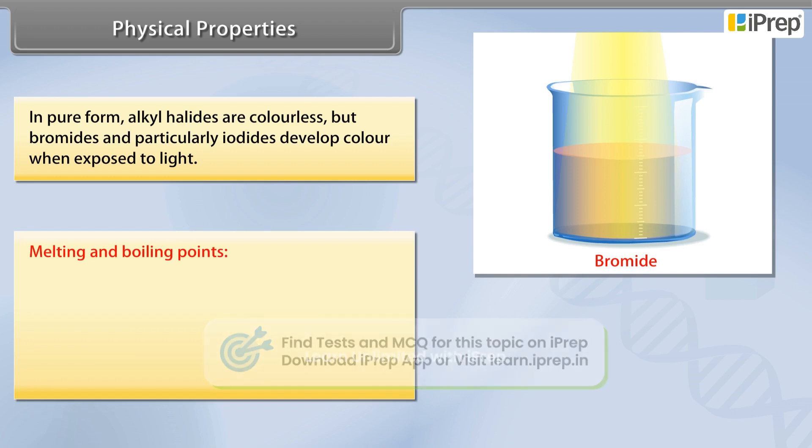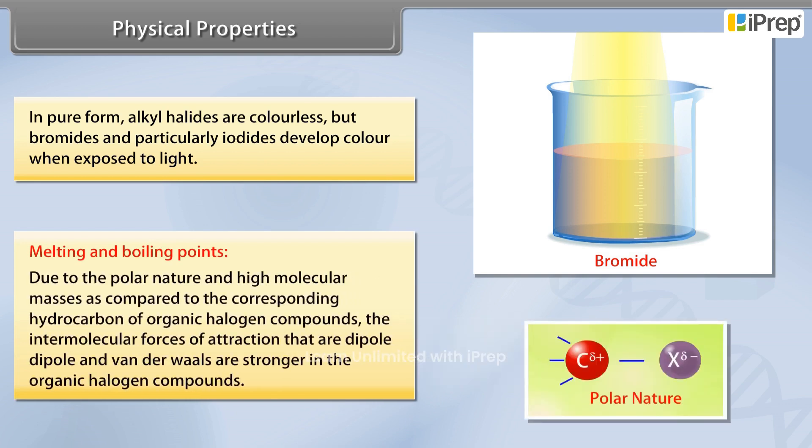Melting and Boiling Points. Due to the polar nature and high molecular masses as compared to the corresponding hydrocarbon of organic halogen compounds, the intermolecular forces of attraction that are dipole-dipole and van der Waals are stronger in the organic halogen compounds.